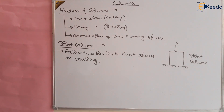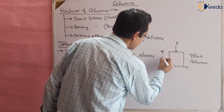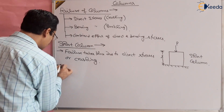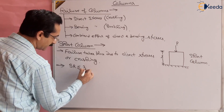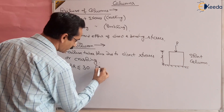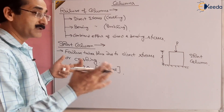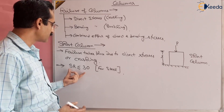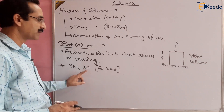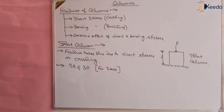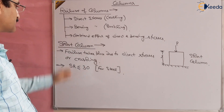For a short column, since the length is very small, the slenderness ratio will also be small. For steel, the slenderness ratio is less than or equal to 30 for short columns. Different materials may have different slenderness ratios — for aluminium or concrete it is different — but for steel, slenderness ratio less than 30 means it is a short column, and failure takes place due to direct stresses only.